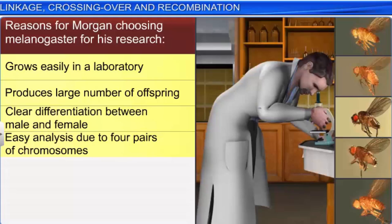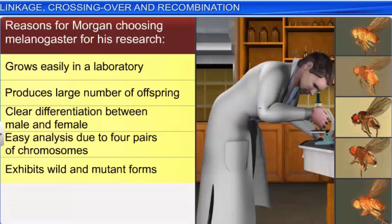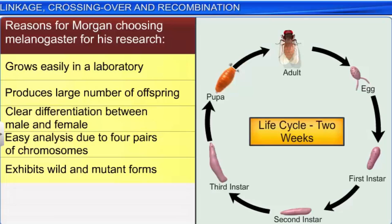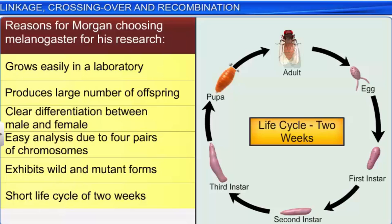Another reason for Morgan selecting these flies was that they showed several hereditary variations, which could be easily seen through low power microscopes. Finally, these flies had a life cycle of just two weeks, which would help study several generations within a short span of time.